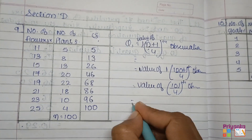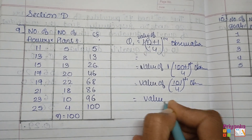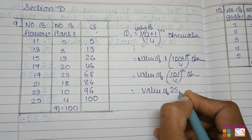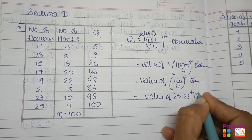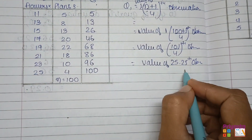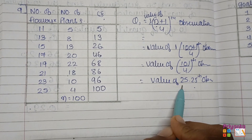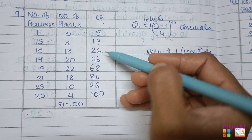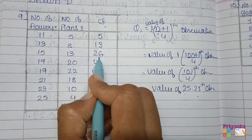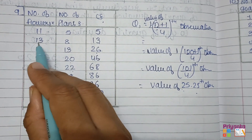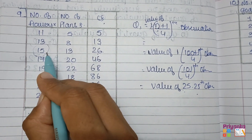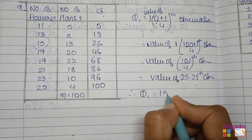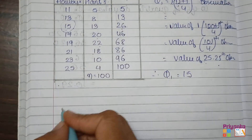Doing the calculation: 101 divided by 4 gives the 25.25th observation. Now we need to select from the cumulative frequency where this falls. Since 25.25 falls after 13 and within 26, the 26th cumulative frequency row gives us our value. Therefore Q1 is equal to 15.